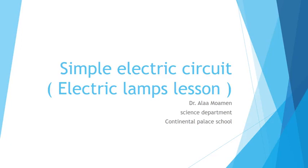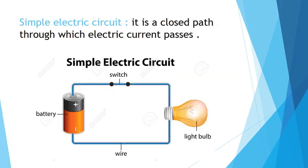Let's take the simple electric circuit in the electric lamps lesson. We have said that to turn on the light or to turn on the lamp, you need electricity. Think with me — if you need to turn on the lamps in your room, what is the first thing you are going to do? You are going to go to the switch to turn it on. You are going to push the switch to turn the light on.